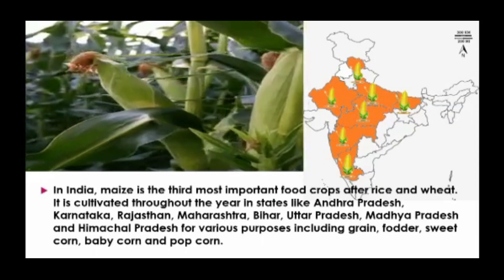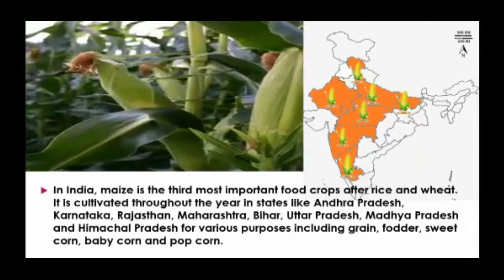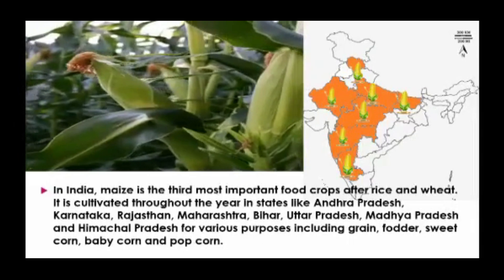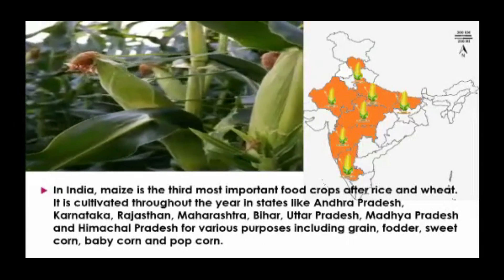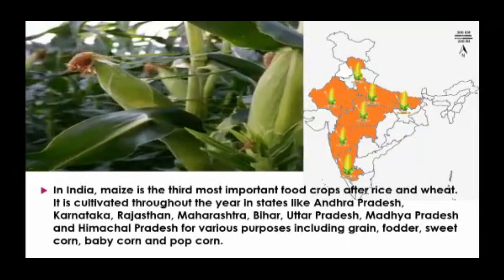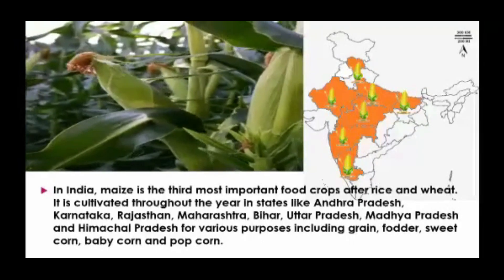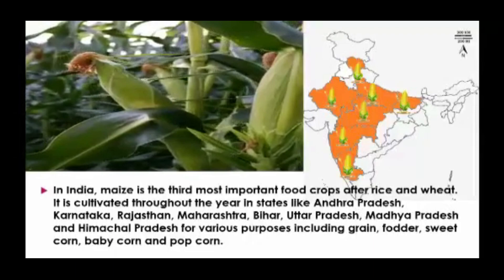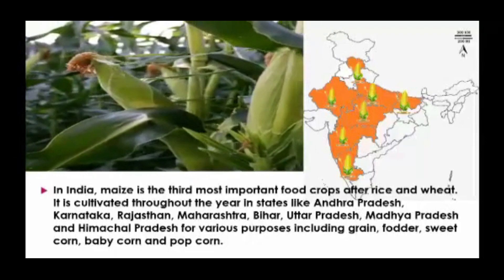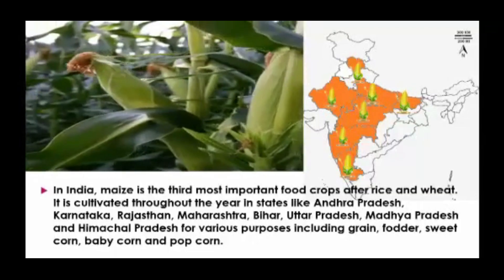Maize is the third most important food crop after rice and wheat. It is cultivated throughout the year in states like Andhra Pradesh, Karnataka, Rajasthan, Maharashtra, Bihar, Uttar Pradesh, Madhya Pradesh, and Himachal Pradesh, for various purposes including grain, fodder, sweet corn, baby corn, and popcorn.